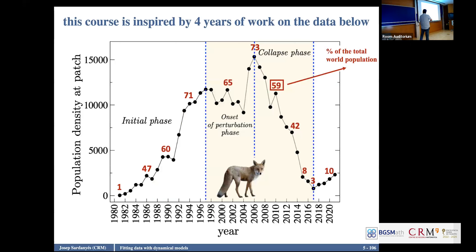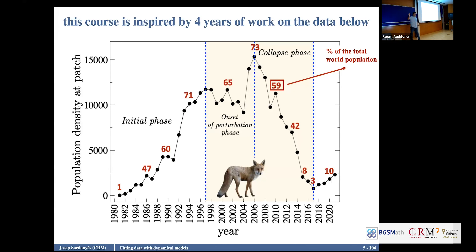This is the dynamics, as I explained. These are the percentages of the total world population. In 2006, 73% of the whole world population was in La Banya, and this is how it evolved. So this is a challenge for a modeler. We have quite a lot of points — this is a 42-year-long time series, which is a very good time window — and here we have different phases and different dynamics.